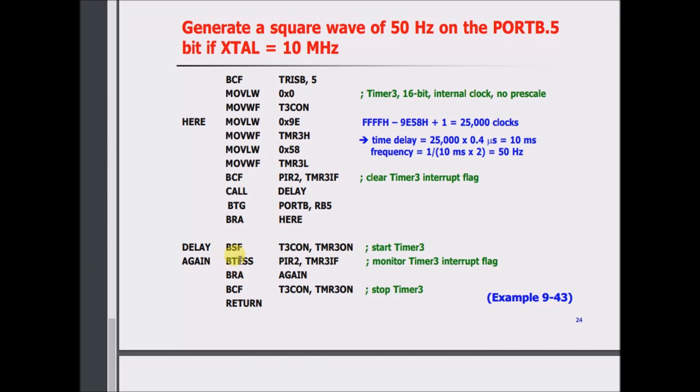Bit test F, skip if set. So it'll set if it overflows, and if it's set, it skips the next line. But if it doesn't get set, it just iterates through here and kind of hangs here for a little while until it does get set as an overflow. And then it'll skip this, it'll bit clear this timer 3 on, which will basically stop the timer.